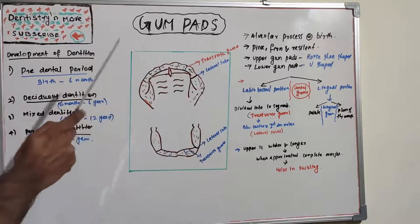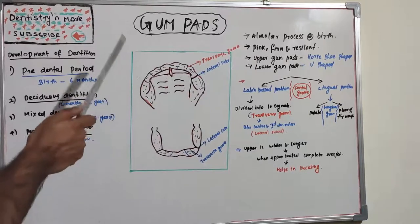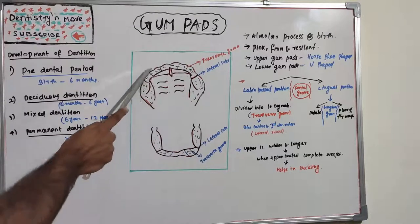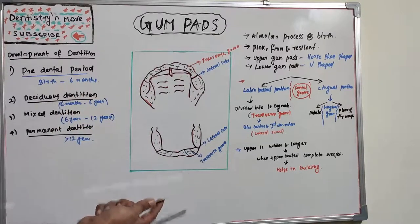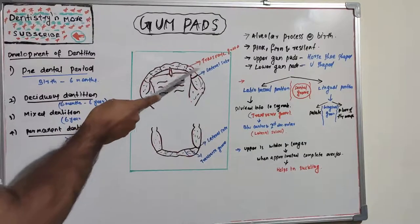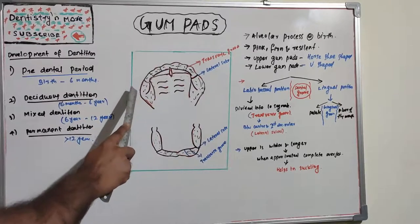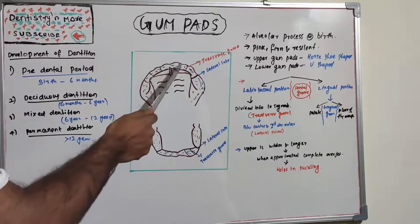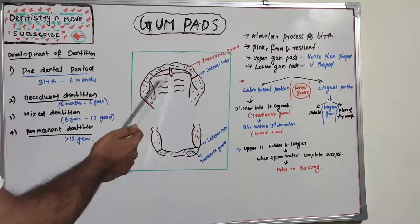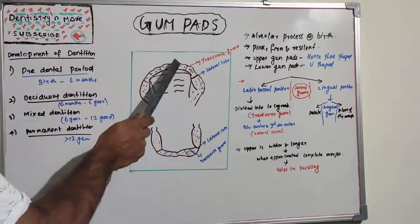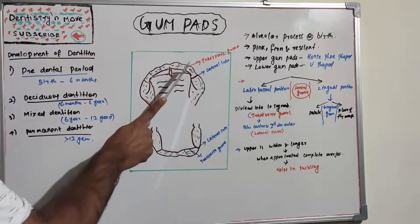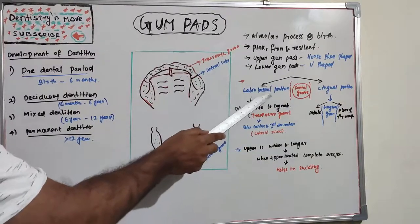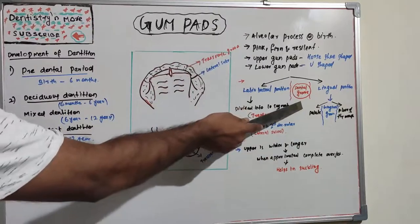The upper gum pad is horseshoe-shaped and is divided into 10 segments by transverse grooves, to accommodate 10 teeth — five on each side: central incisor, lateral incisor, canine, first molar, and second molar on each side. The dental groove separates the labio-buccal portion and lingual portion of the gum pad.